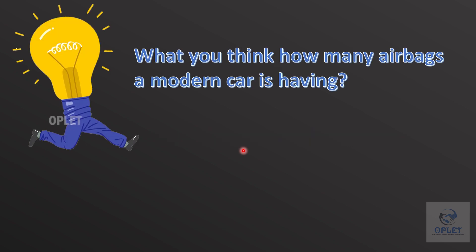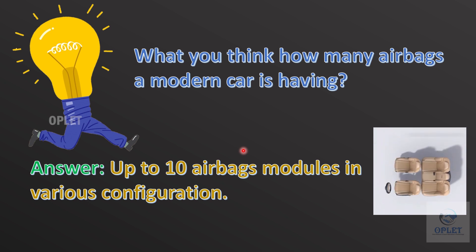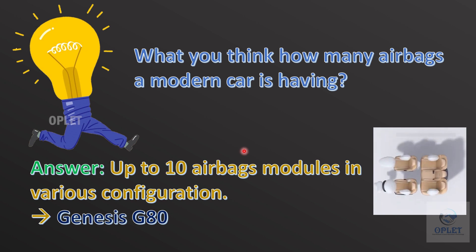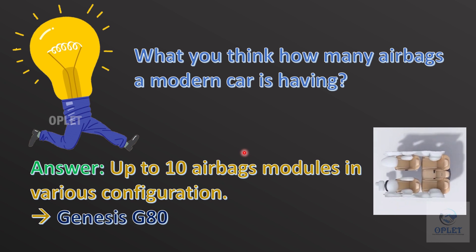Last video I asked you one question: how many airbags does a modern car have? The answer is a modern vehicle may contain up to 10 airbag modules in various configurations. For example, the Genesis G80 has 10 airbags, but in India the maximum is 7 airbags in the Toyota Yaris, and next to that 6 airbags are available in the Ford Figo and Hyundai Elite i20.